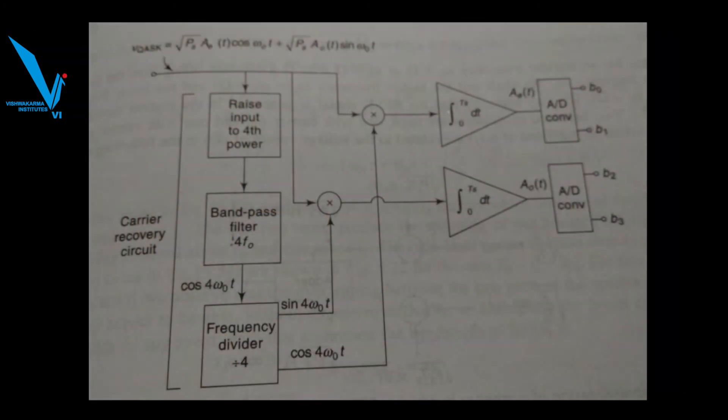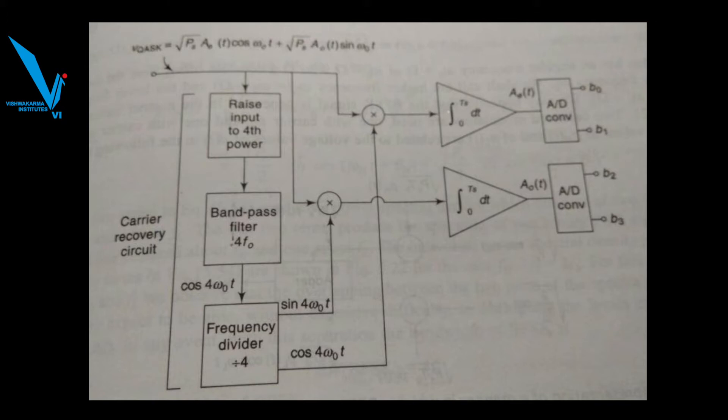Now if we come to the receiver, how you retrieve the QASK signal. The received signal will be given to the carrier recovery circuit and bit recovery part, and the procedure for that is the same. The first block is, since we are using four bits in one symbol, the input of the received signal is raised to the fourth power, then the bandpass filter which is 4f₀, the output cos(4ω₀t) now goes to the frequency divider which divides by 4, and which gives the retrieved carrier as cos and sin.